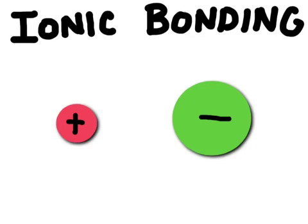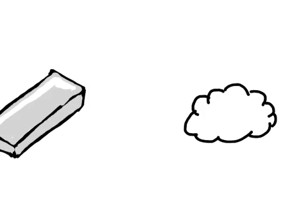In this video we're going to talk about how ionic bonds form. In general, ionic bonds are going to form when a metal reacts with a non-metal.